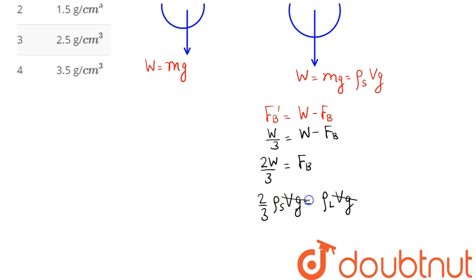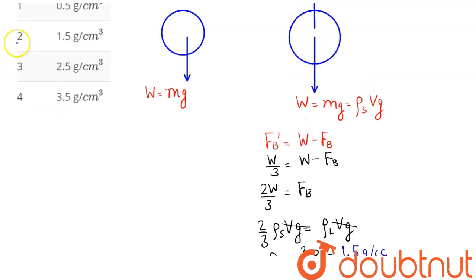Now Vg, Vg cancels out, so we have density of the solid body equal to three by two into density of the liquid. Now here water density is one gram per cubic centimeter, so this comes as 1.5 gram per cubic centimeter. Amongst the four options, we can say here 1.5 gram per cubic centimeter, that is option number two is the correct answer.